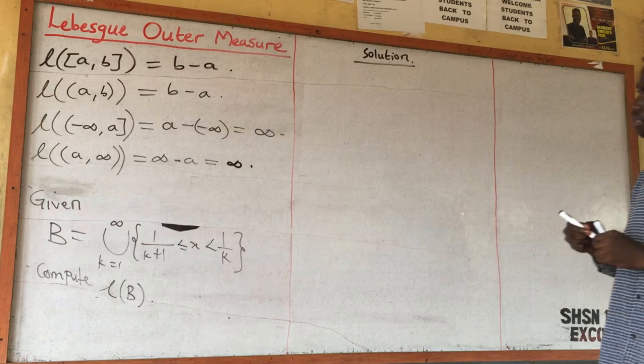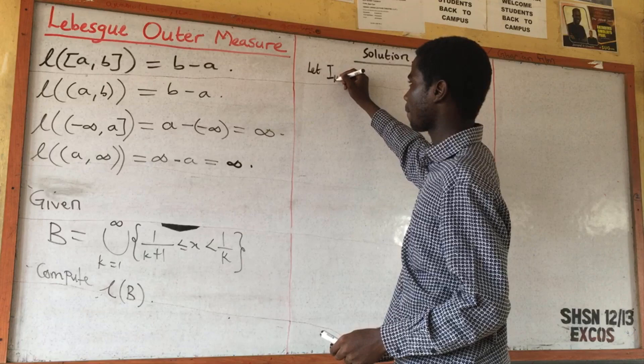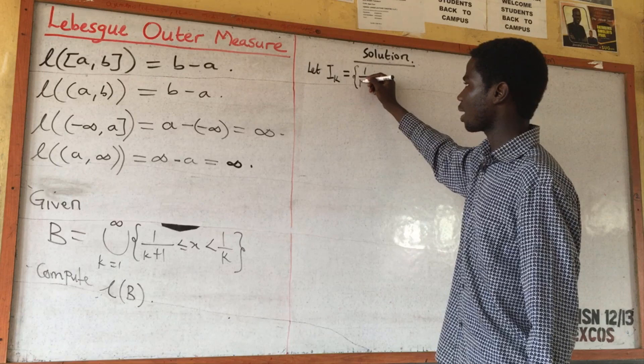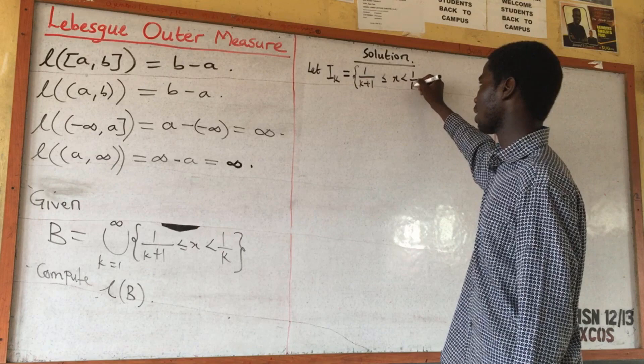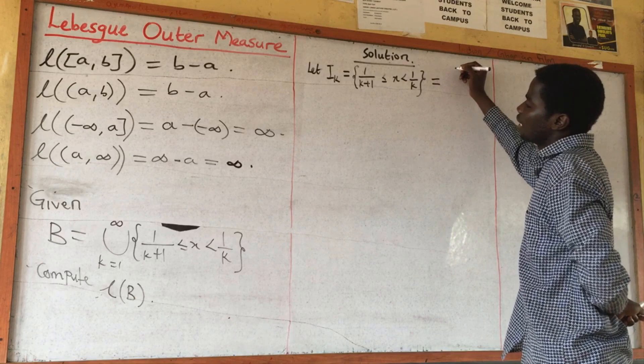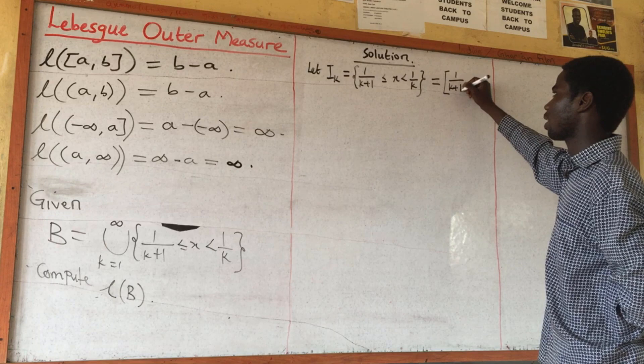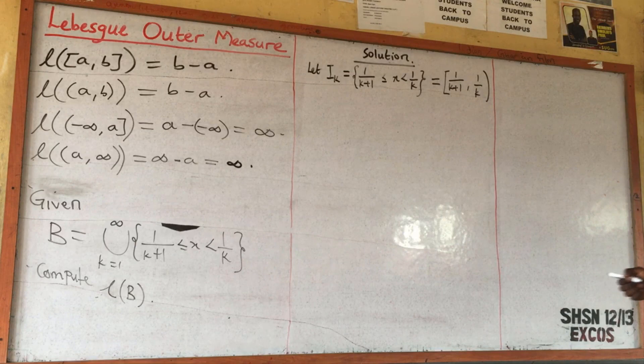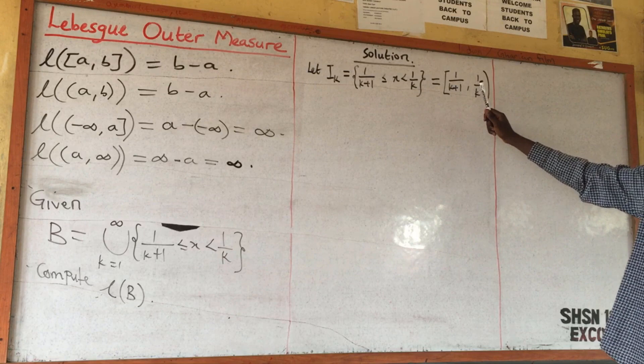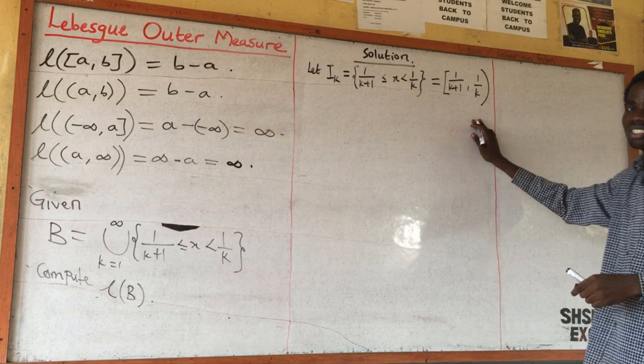In the solution, since we want to compute B, let I_k be the interval {x : 1/(k+1) ≤ x < 1/k}. In reality, this is the same as the half-closed interval [1/(k+1), 1/k). We can see that this interval is disjoint.